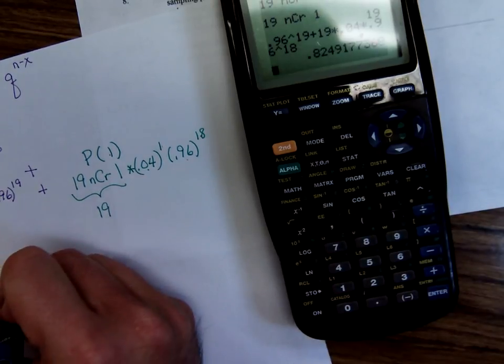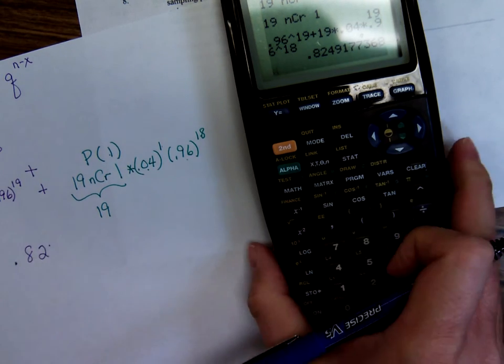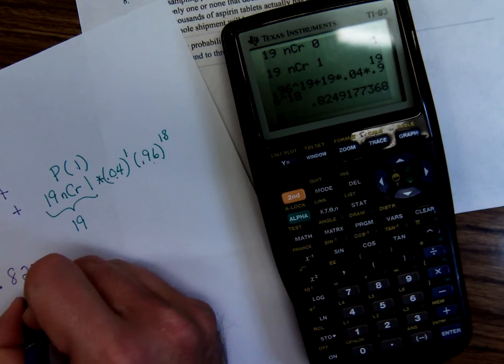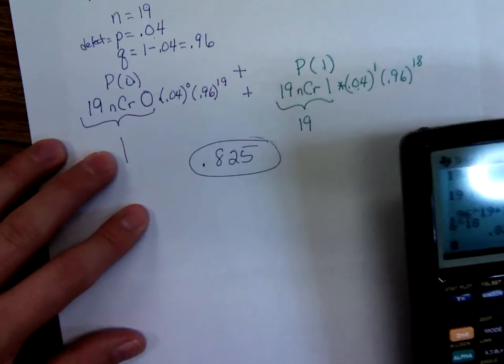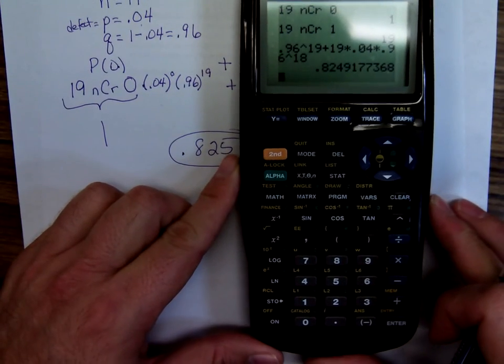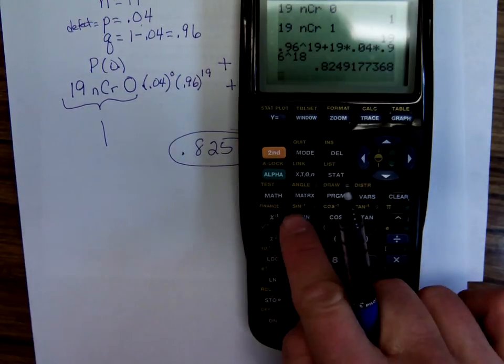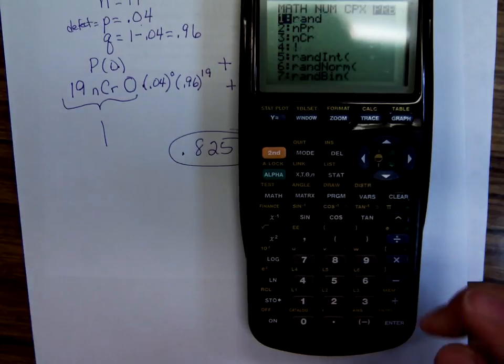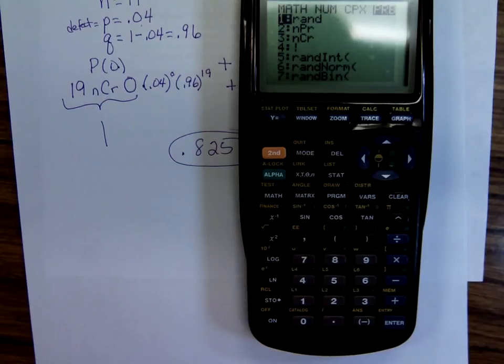And we're getting 0.82 and the instructions here said round it to three decimal places. So, 0.825 would be your answer there. So, you need to practice using that math. When you hit math, move over to probability, and that's where you have your factorial key, NCR, and NPR key.